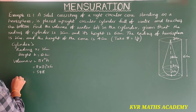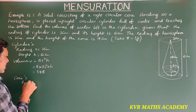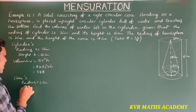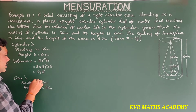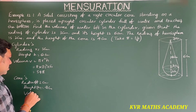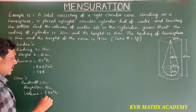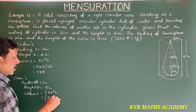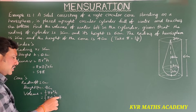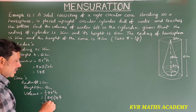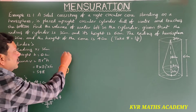Next, for the cone: its radius is 2 cm and height H is equal to 4 cm. Volume is equal to 1 by 3 pi R squared H, that is 1 by 3 into pi into 2 squared into 4. 2 squared is 4, and 4 into 4 is 16. So volume of the cone is 16 pi by 3.